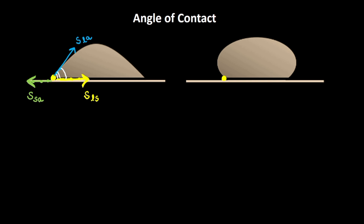Let theta be the angle of contact. Since this particle is in equilibrium, all forces are balanced. Balancing horizontal forces — the sum of forces in the x-direction equals zero — we get: S_SA = S_LS + S_LA · cos θ. Therefore, S_LA · cos θ = S_SA − S_LS.